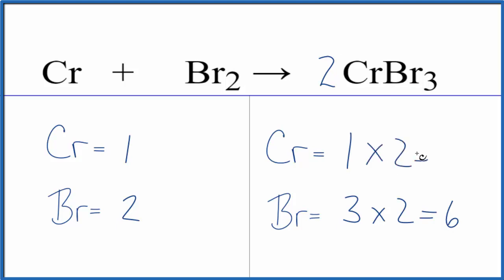Now I have two chromiums. Let's fix the bromines. To get six over here to balance this six, I could put a three as my coefficient. Two times three, that gives me six. So you can see getting this to be an even number that really helped.